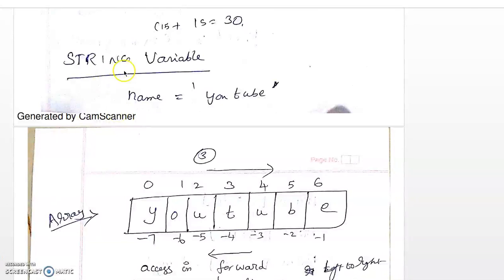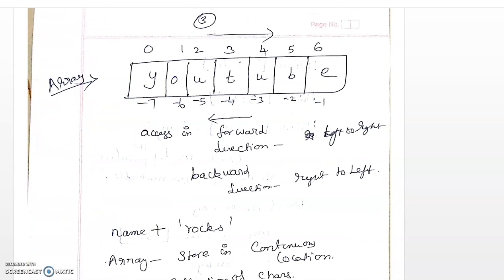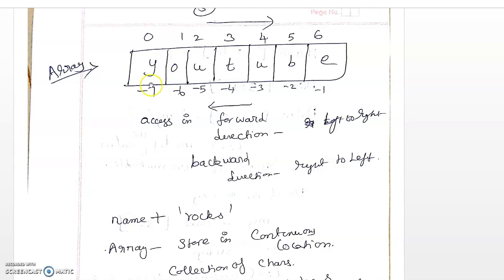Here we are going to see about the string variable — that is, how to access the string which is stored in the variable. I have stored the word 'word' in the name variable. How is it stored in memory? Each character is stored in a separate location. Index values are used to access or read a particular character from the memory.